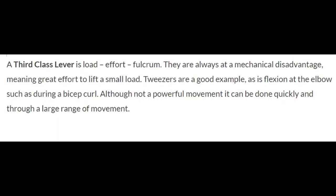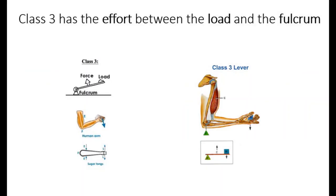A third-class lever has the arrangement of load, effort, and then fulcrum. These are at a mechanical disadvantage — a great effort is required to lift a small load. Tweezers are a good example. Flexion at the elbow, such as during a bicep curl, is another example. It's not a powerful movement, but it can be done quickly and through a large range of motion.